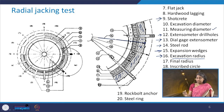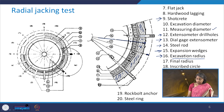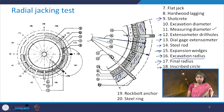Component 15 is the expansion wedges, part of the assembly for the extensometer arrangement. Component 17 is the so-called final radius. Component 18 is the inscribed circle after laying the shotcrete layer — whatever is the resultant final radius is what we call the inscribed circle.